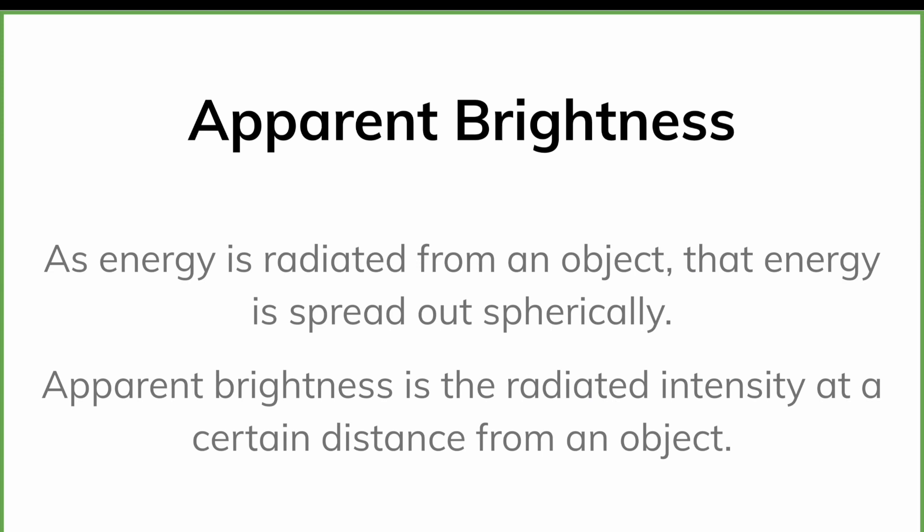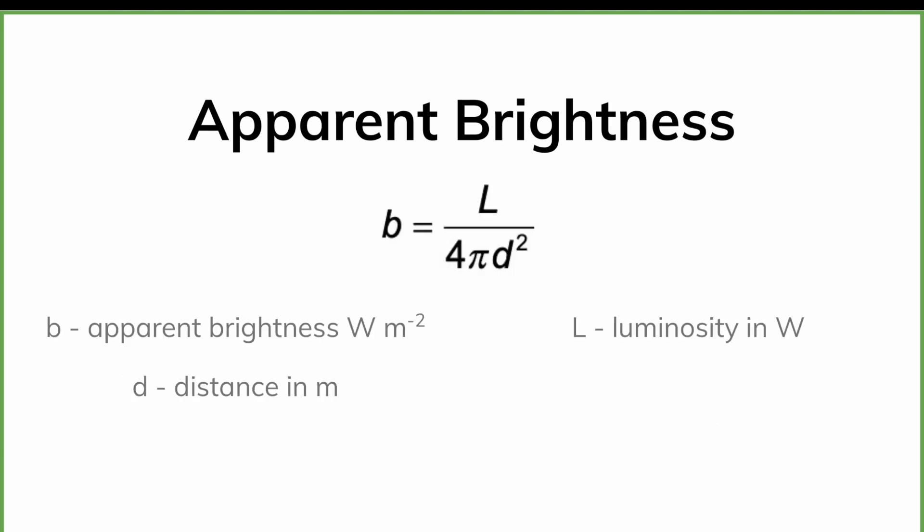This concept is what we call the apparent brightness of a star. So as the energy spreads out spherically, the energy is dissipated. And the apparent brightness is the radiation intensity at a certain distance from the object. The formula for apparent brightness is the luminosity of the object divided by that spherical surface area at a certain distance from it. So if you want to imagine, this is the power output of the star. And as that power gets dissipated over these long distances, we divide by the sphere's surface area, and that tells us the intensity at a particular point. And we refer to that as apparent brightness. We give that the letter B.